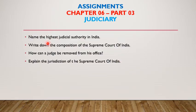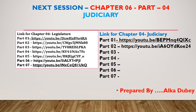Now, the assignment for Chapter 6, Part 3 is as follows. Number 1: Name the highest judicial authority in India. Number 2: Write down the composition of the Supreme Court of India. Number 3: How can a judge be removed from his office? Number 4: Explain the jurisdiction of the Supreme Court of India. These are the 4 questions that you need to answer in your fair copy. In the next section, Chapter 6, Part 4, we will continue with the chapter. Om Namah Shivaya.